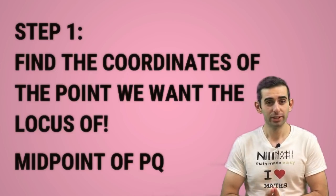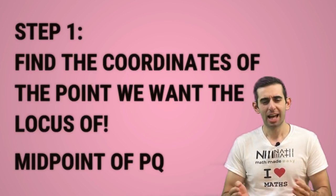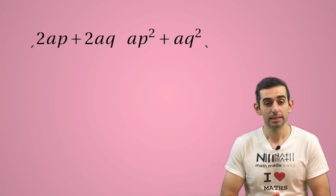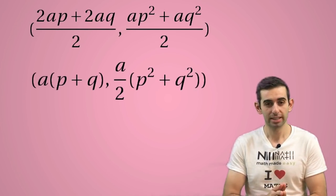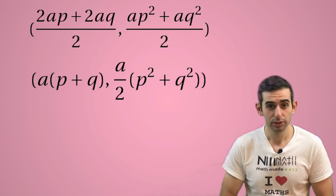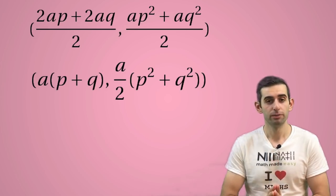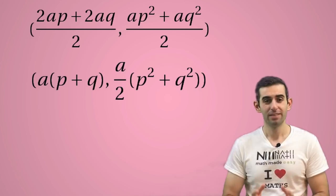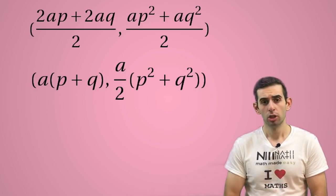Let's find the midpoint of PQ. We just average the coordinates and we'll get a(p+q)/2 for the x-coordinate, and a(p²+q²)/2 for the y-coordinate. So that's the coordinates of the midpoint of PQ.